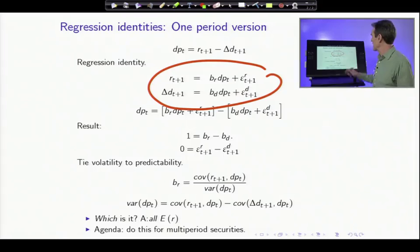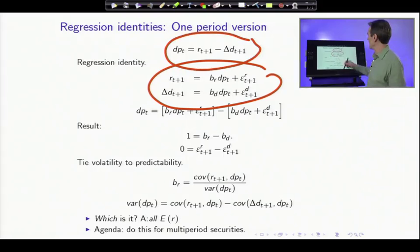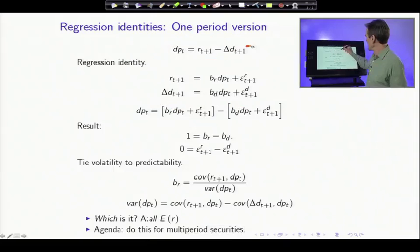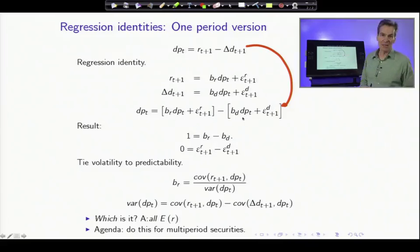Now, however, we have this identity linking returns, dividend growth, and dividend yield. So what does that mean? Well, I'm just using the identity. So this equation goes to that equation. Dividend yield is, that's the future return, but I've substituted in from the regression equation. And that's the future dividend growth, substituted in from the equation.